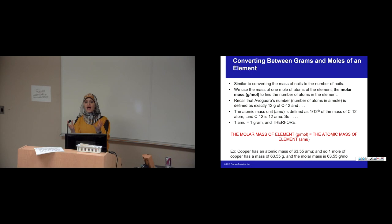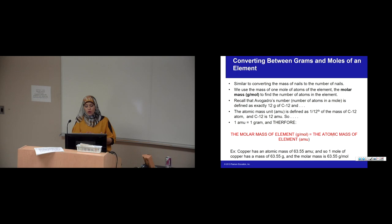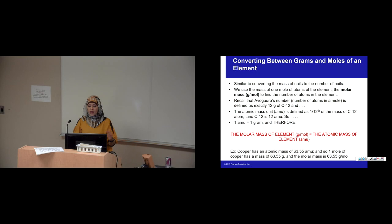We do not work with one atom at a time in a chemistry laboratory — we need to scale this up. We're talking about one mole of atoms at a time. Just as we said one dozen of nails weighs 0.15 pounds, here we say one mole of copper weighs 63.55 grams. Whatever you used to find atomic mass — if I ask for the molar mass of copper — you replace AMUs with grams per mole. We derive this from Avogadro's number.